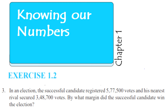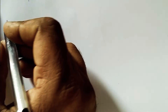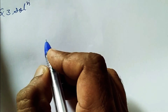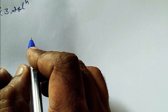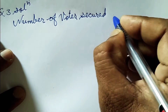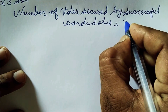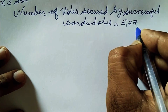So, the candidate who successfully won received the most votes. We will find out how many votes he won by. The two values are 5,77,500 votes and 3,48,700 votes. We will find the margin. We will write this as a solution. Number of votes secured by the successful candidate: 5,77,500.